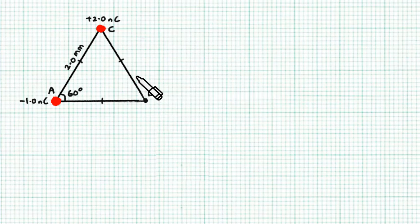So we have an equilateral triangle of size 2.0 mm. We have two charges at A and C, and we want to calculate the resultant potential at B. Let's start with charge C.